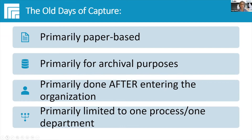If your organization is like so many others, you probably have a hybrid of paper and digital inputs — for things like invoices, contracts, claims, receipts, and shipment documents. You're probably going to have that hybrid situation for the foreseeable future, which means all of these disparate digital and paper streams somehow have to come together in a single stream so that you can really manage it efficiently.